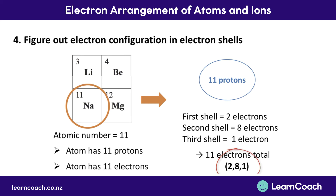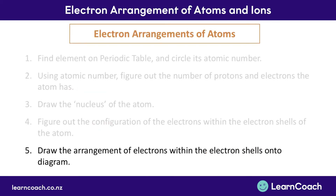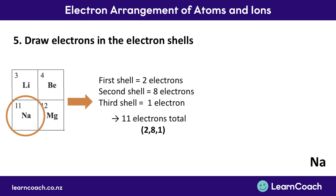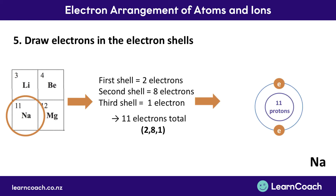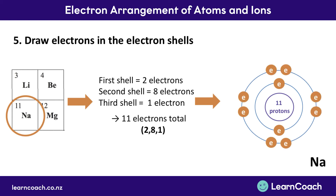We can then finally move on to the last step, which involves drawing the arrangement of the electrons into the electron shells on the diagram. The first shell is going to have 2 electrons, the second is going to have 8, and the last valence shell is going to have 1 valence electron. We draw 2 electrons in the first shell, then 8 electrons in the second shell sitting in pairs, and finally a third shell with only 1 electron sitting in it.